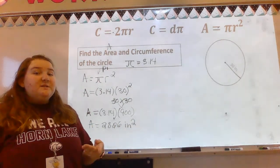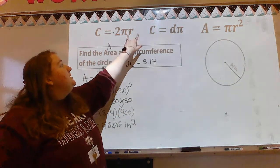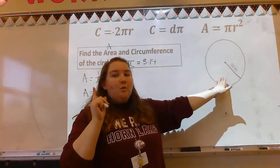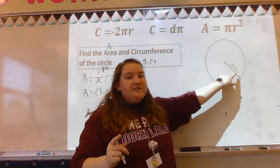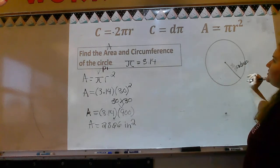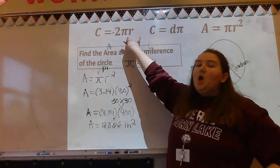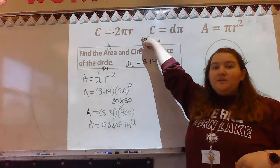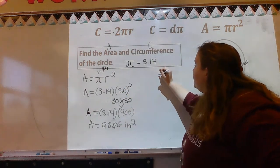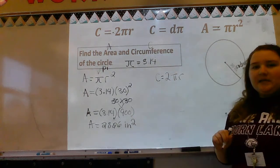We're not done with this problem — we also have to do circumference. We have two different circumference formulas. Look at the information we're given: 30 inches is our radius. So I'm going to look at my circumference options. C is for circumference and I have two of them. I need to decide which one has a radius — that's going to be C equals 2 pi r.